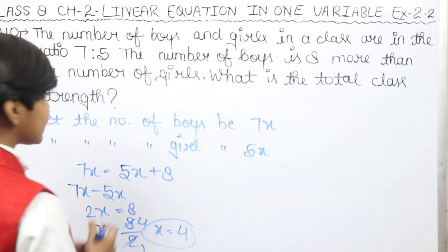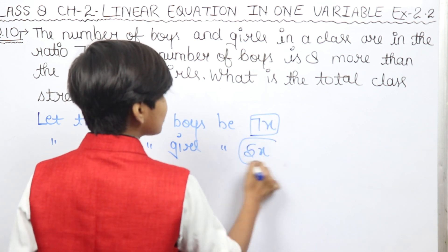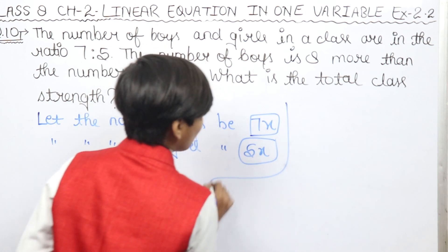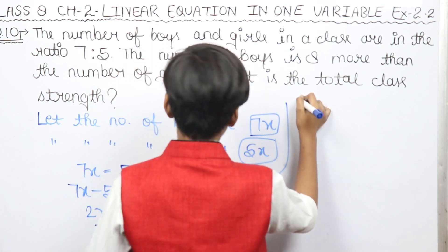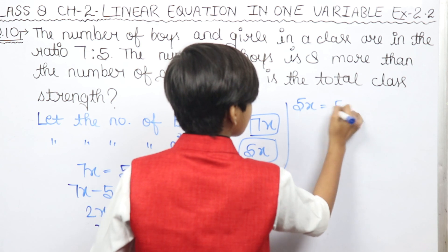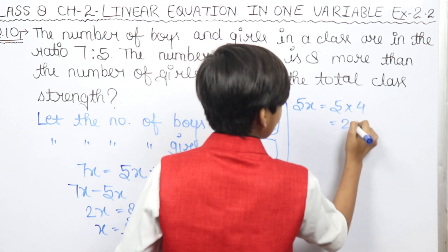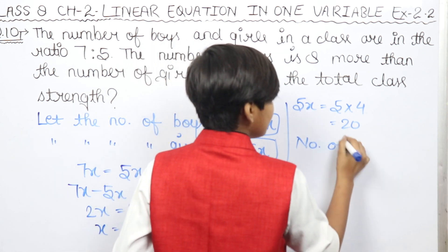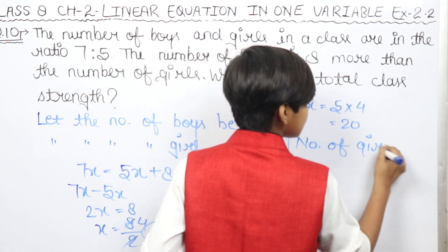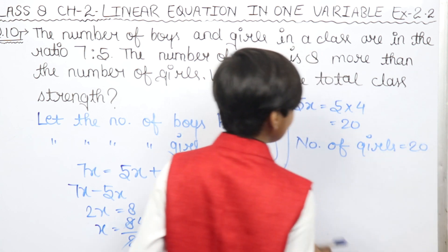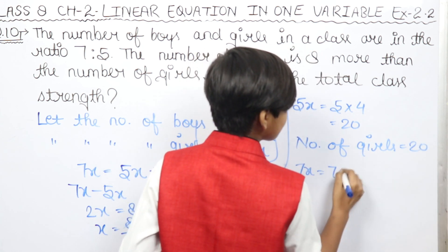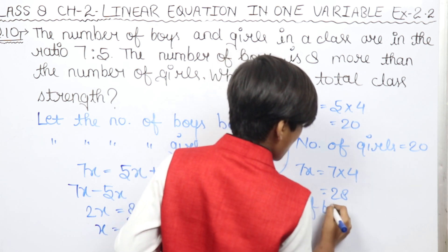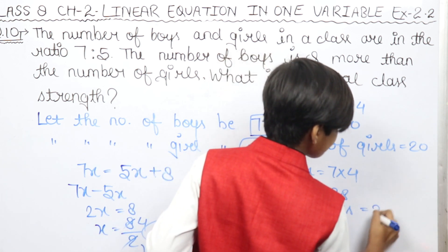Now we substitute x = 4. The number of girls is 5x = 5 × 4 = 20. So the number of girls is equal to 20. The number of boys is 7x = 7 × 4 = 28. So the number of boys is equal to 28.